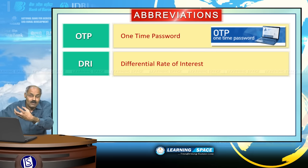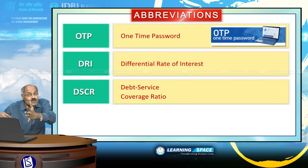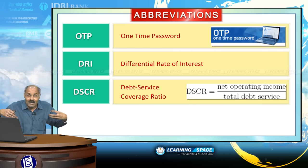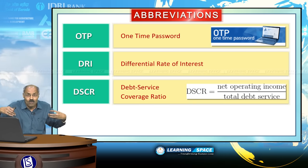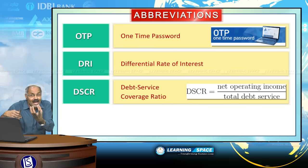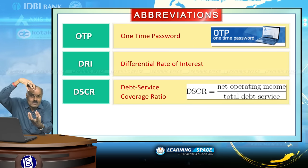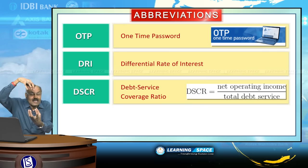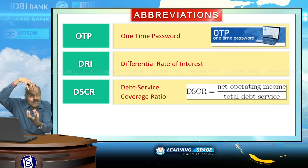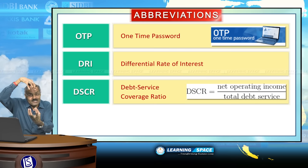DSCR is Debt Service Coverage Ratio. If you have taken a loan and started a company, and you have to pay back one lakh rupees to the bank every month — if your income every month is also rupees one lakh, then your debt service coverage ratio will be 1, and you will be perceived as somewhat safe.